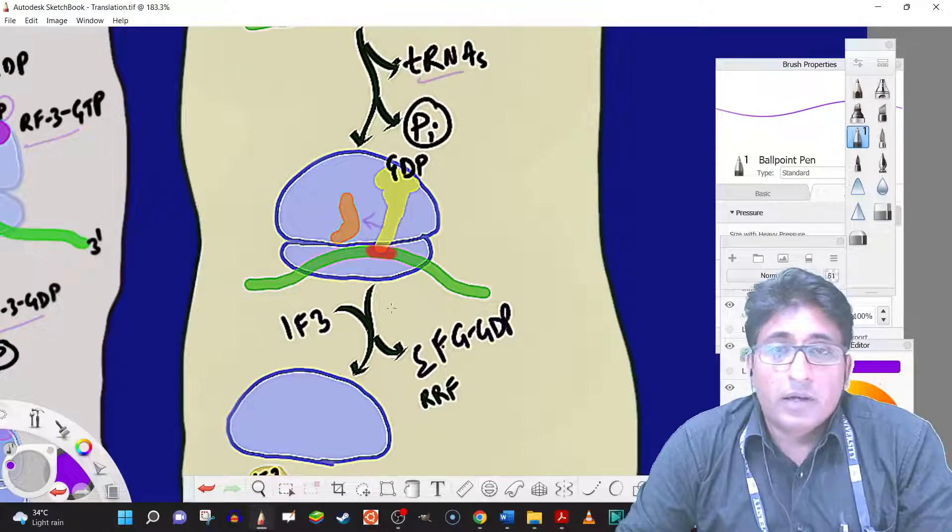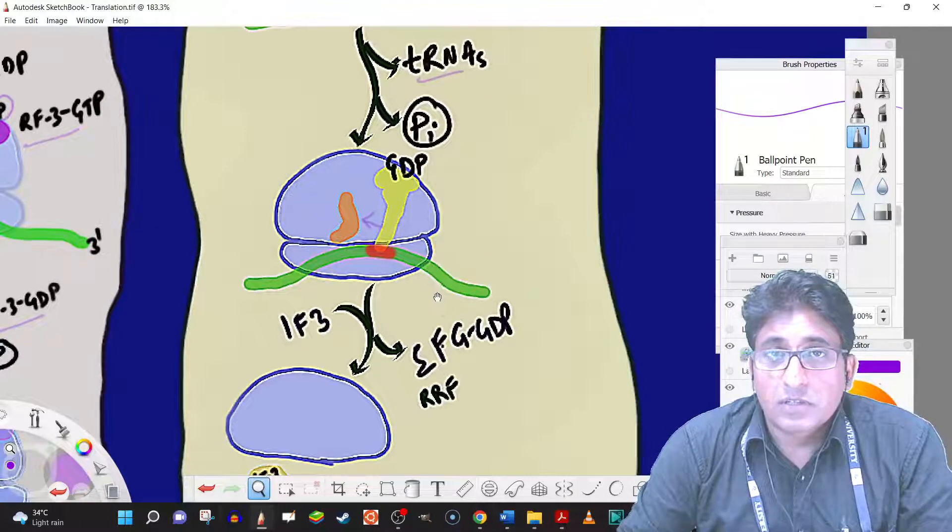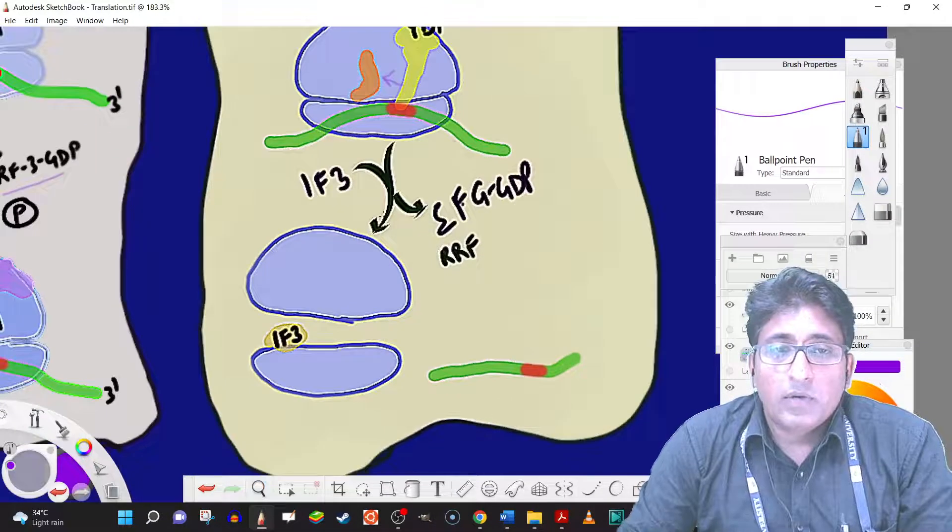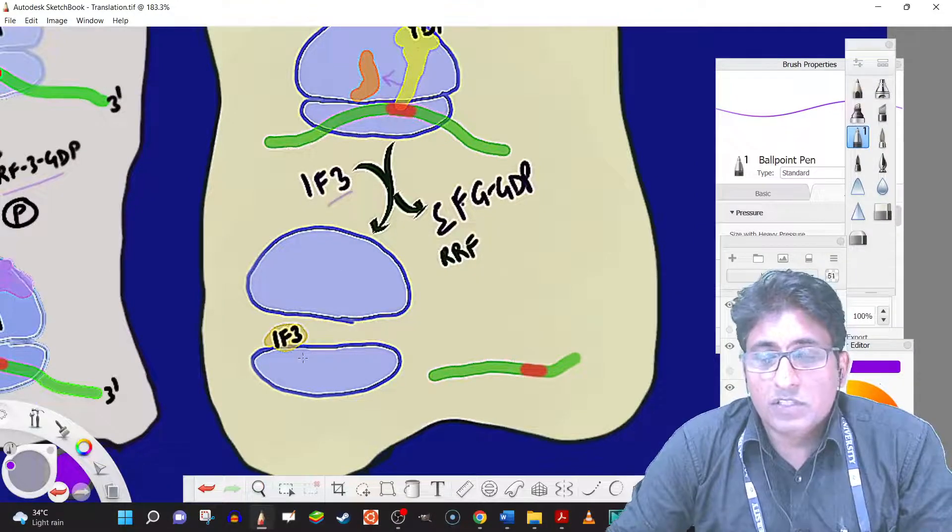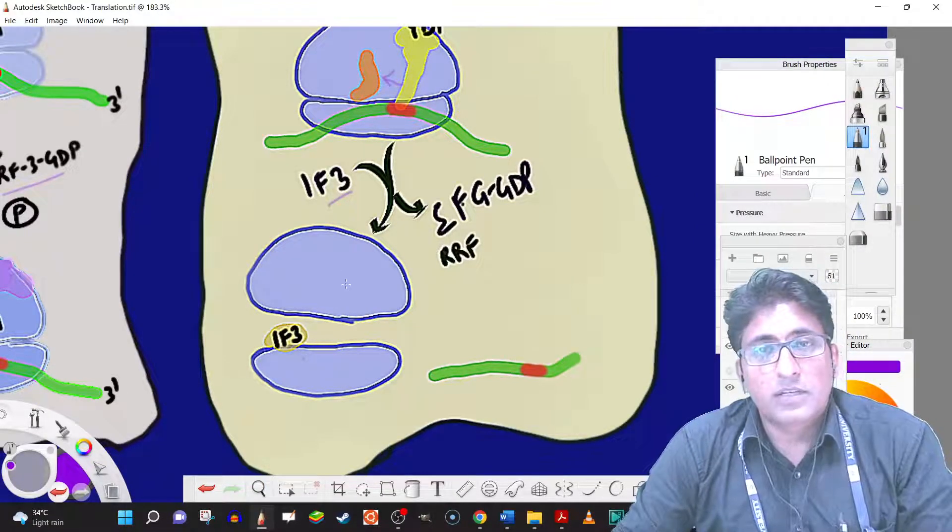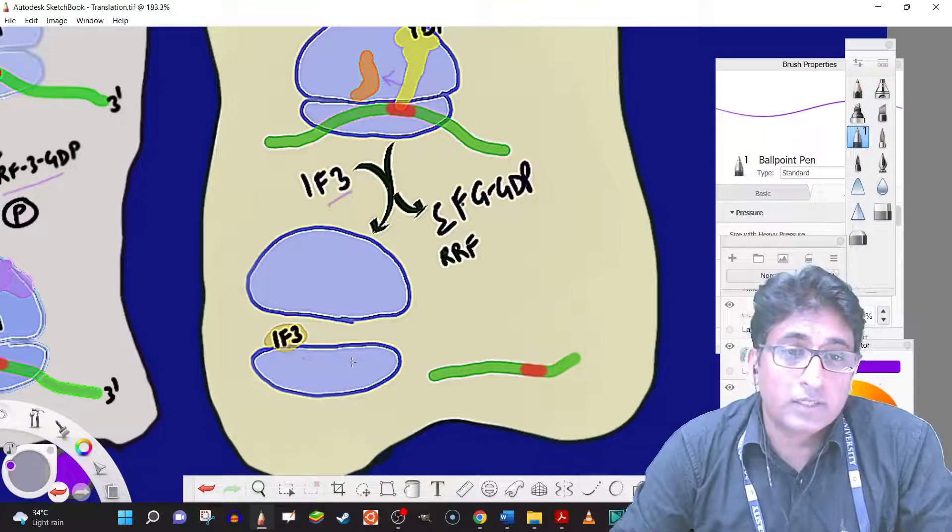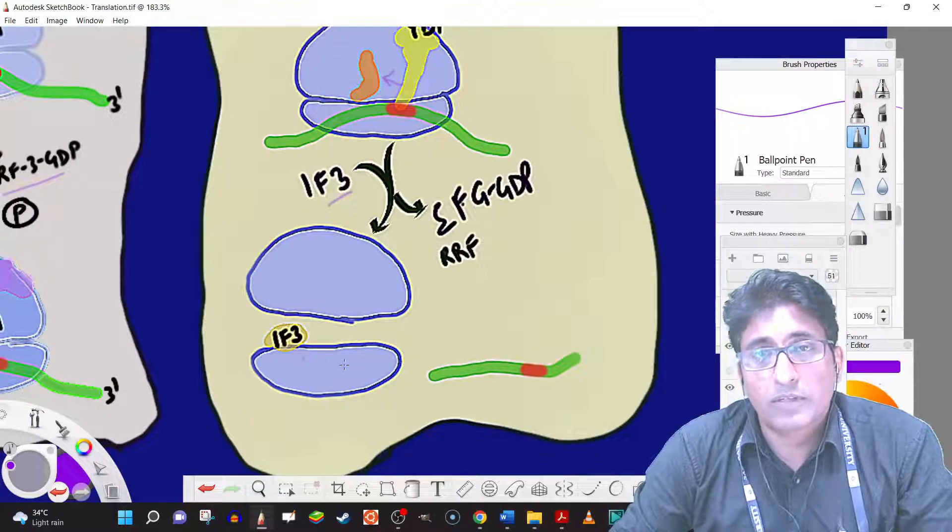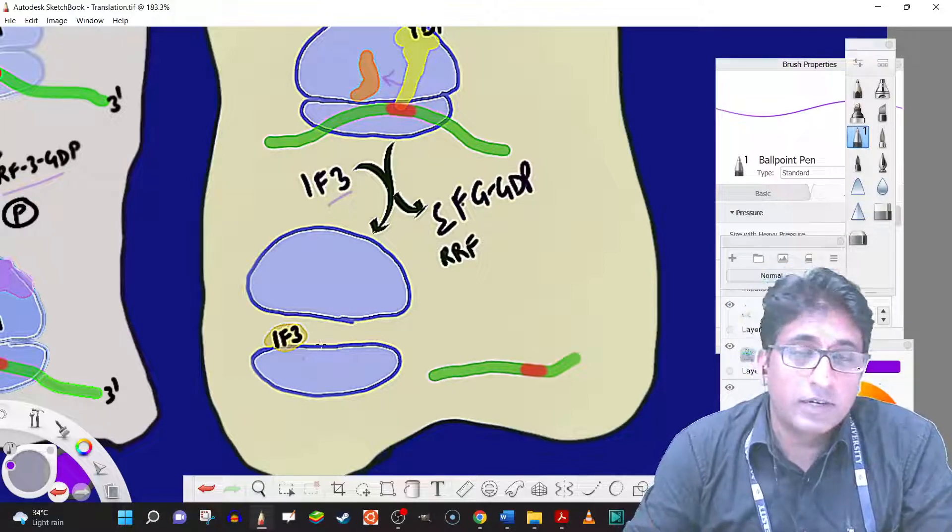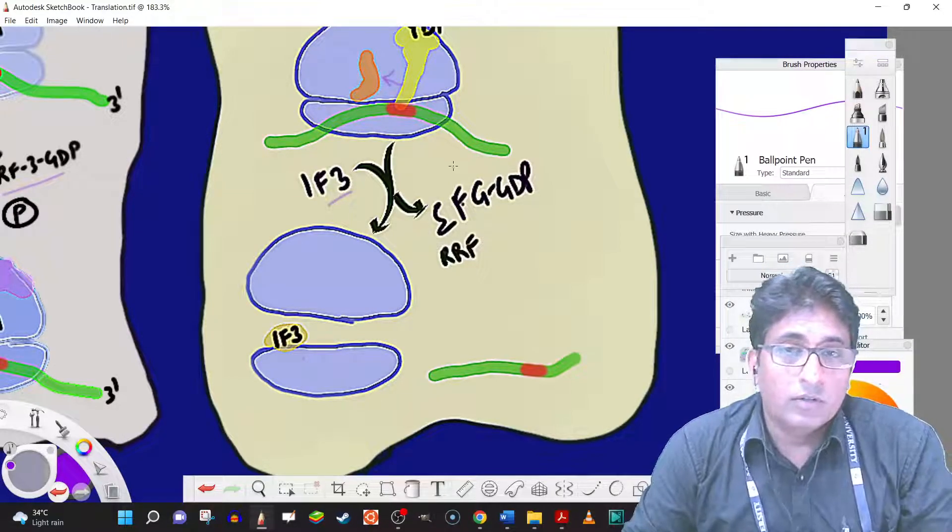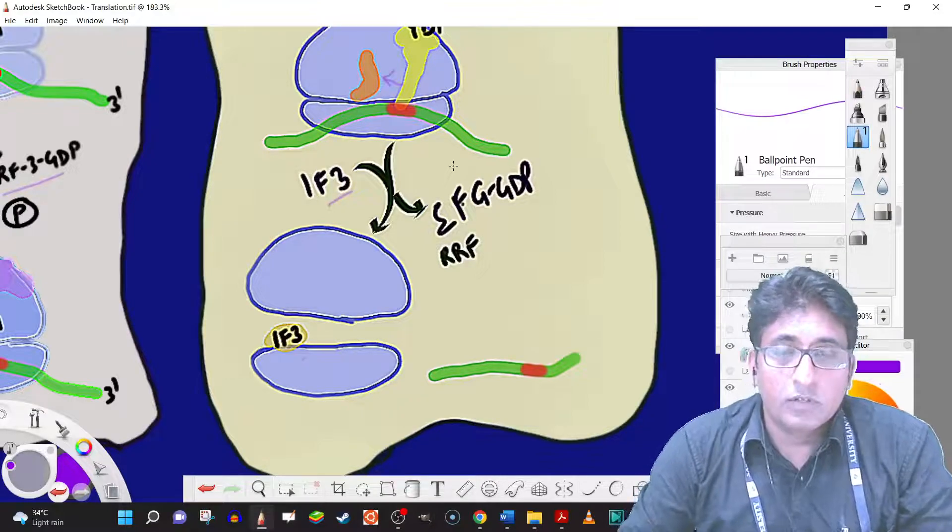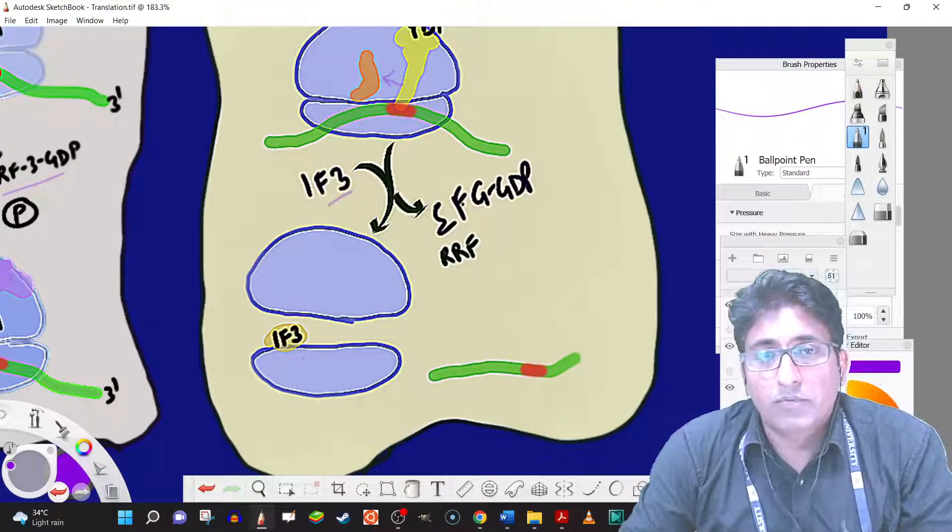And then the RRF is also released and EF-G also is released. Now IF3 would bind to the small subunit thereby preventing the 50S subunit from binding to the 30S subunit. So that the 30S subunit can go and initiate translation again on a fresh mRNA or the same mRNA at the beginning upstream of the open reading frame.